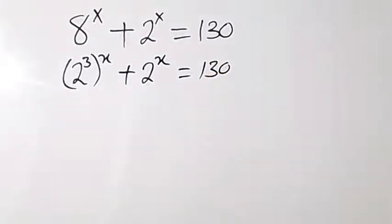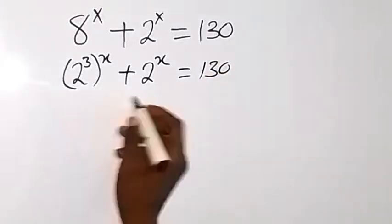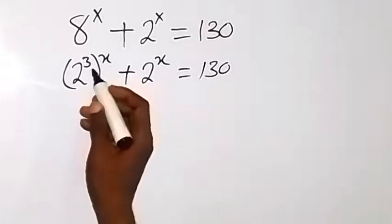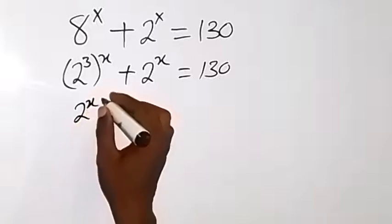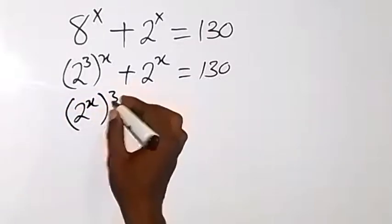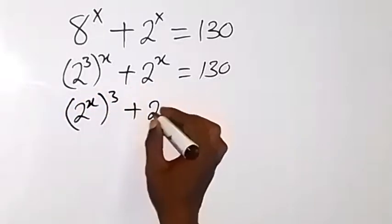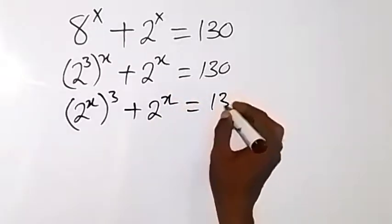When we apply the laws of indices from here, this 3 and x multiply so we can interchange it and say this is 2 raised to power x then raised to power 3 plus 2 raised to power x will give us 430.